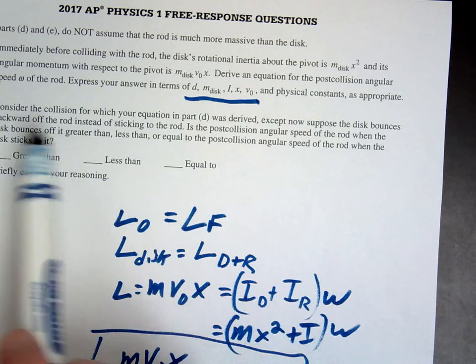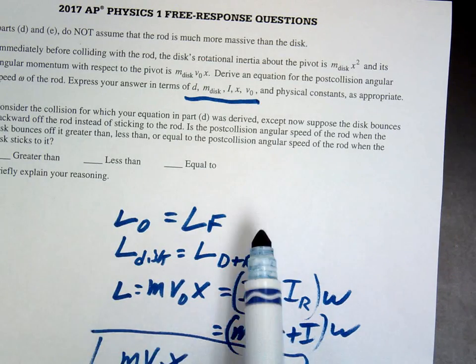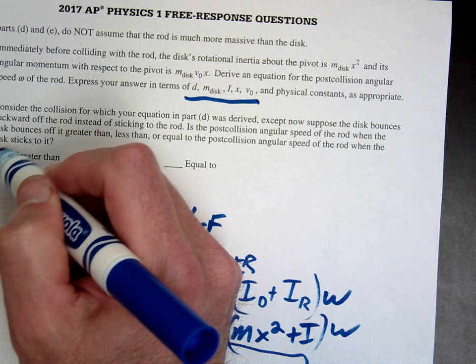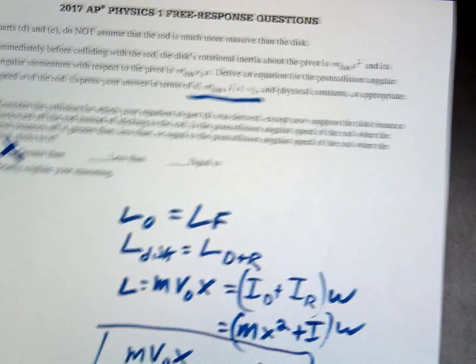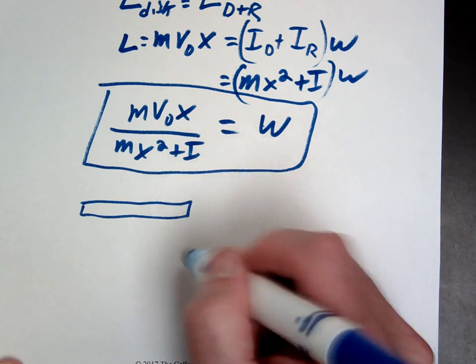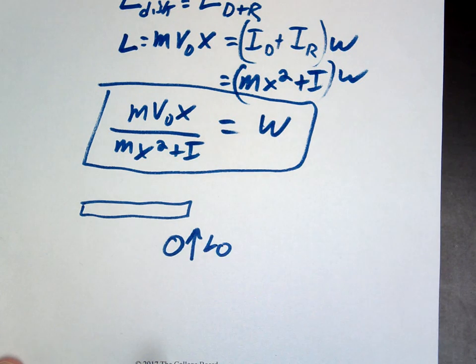Last question, letter E. Suppose it bounces off backwards. What would be true about the angular speed? Well, hopefully you know that this would be greater than. So conceptually, if you imagine this, we have our disc coming in, right? And it has its initial angular momentum.